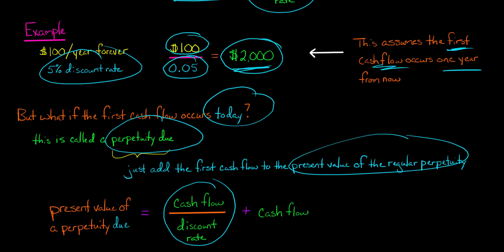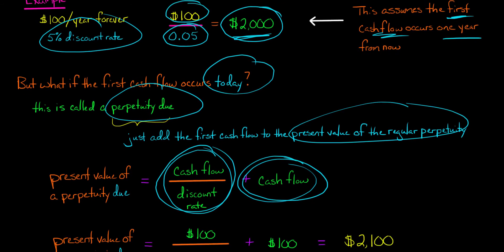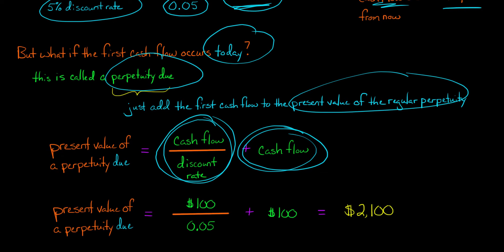So you take that, which we calculated up here as being $2,000, and then you just add that extra $100 cash flow that occurs today. So you just take the regular perpetuity plus that initial cash flow that's occurring today. So in this example that we had before, where we had $100 cash payment every year for all eternity, if we have that first $100 payment occurring today, then the present value of this perpetuity due would be our regular perpetuity, $100 divided by 0.05, plus that payment that occurs today of $100.